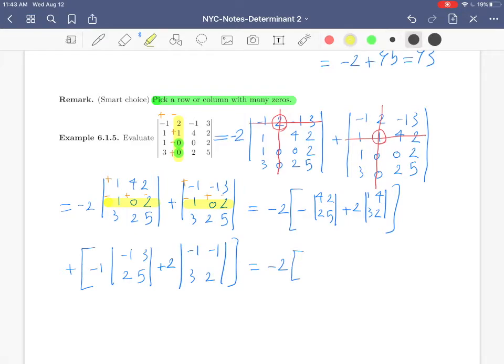The answer becomes minus twice. To compute the determinant of a 2 by 2 matrix, we saw that you have to multiply the main diagonal entry minus the product of non-main diagonal entries. So we get minus 4 times 5, 20, minus 4, plus twice, 2, minus 12. And then plus, minus 1, minus 5, minus 6, minus 11, plus twice, minus 2, plus 3, 1.